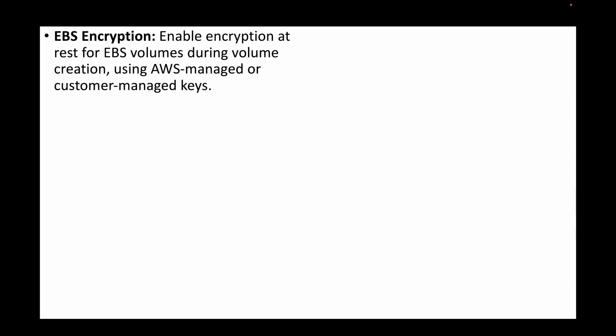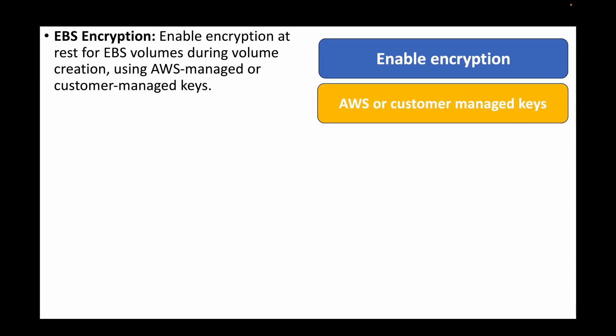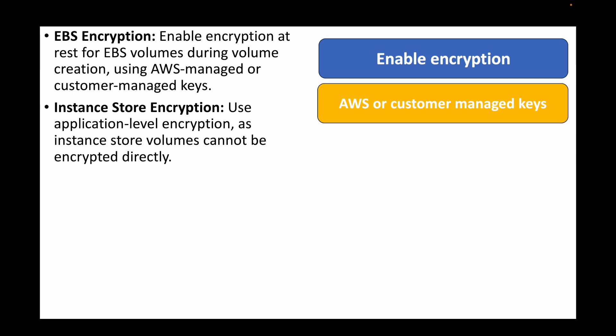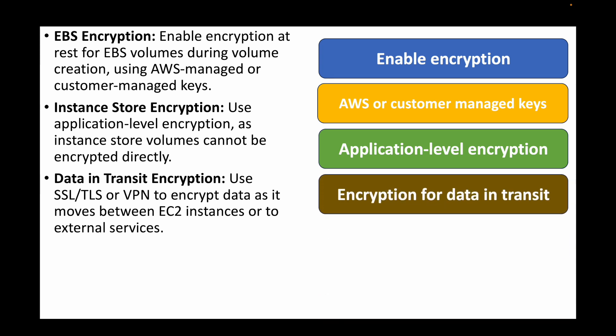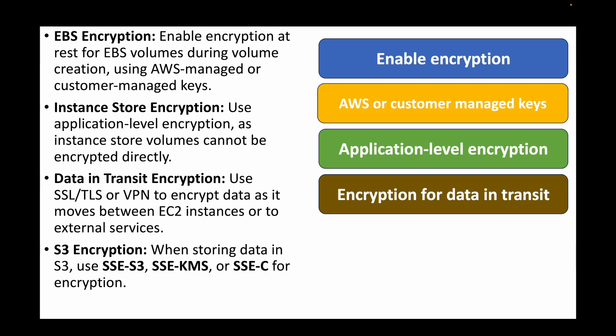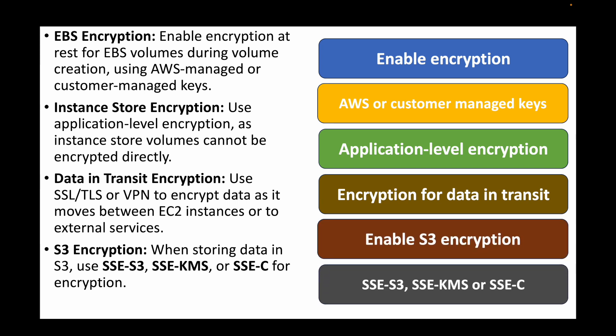The next question is: how can you encrypt data on an EC2 instance? For EBS volumes, you can enable encryption using AWS managed keys or customer managed keys. For instance store volumes, since they do not support direct encryption, you can use application-level encryption. For data in transit, use SSL/TLS certificates or VPNs to encrypt data moving between EC2 instances. You can also store data in S3 and encrypt it using S3-provided keys, KMS, or SSE-C. That brings us to the end of the advanced EC2 interview questions.